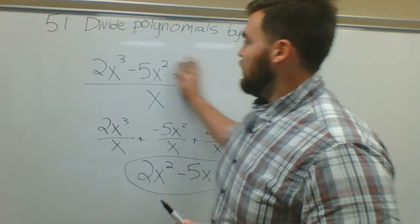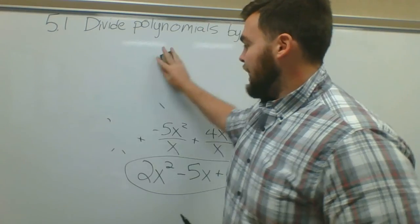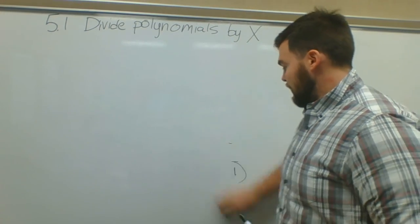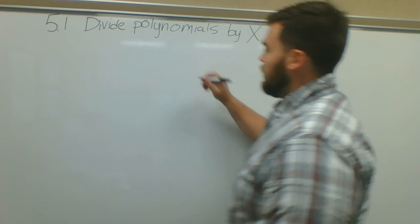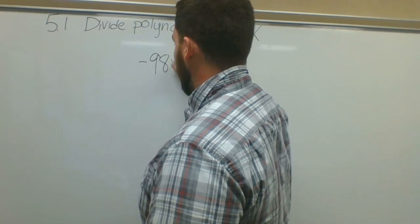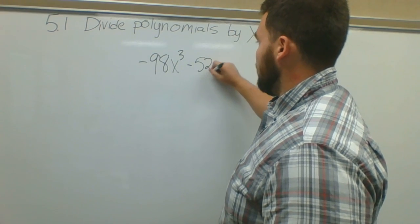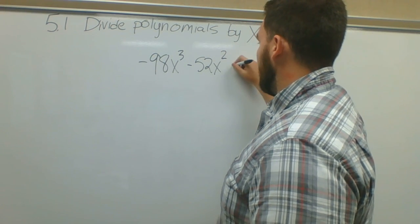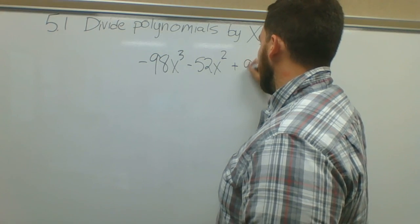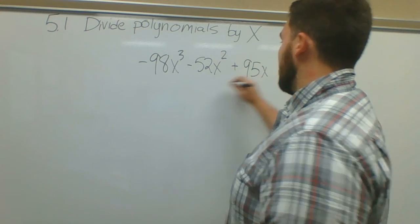I can put up as complicated a problem as I want up here, right? If I were to say negative 98x to the third minus 52x squared plus 95x over x.